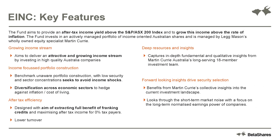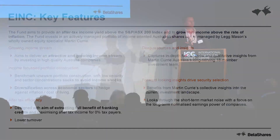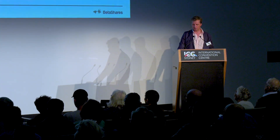Here's what Legg Mason seeks to do in terms of active management: a diversified portfolio focused on quality companies with growing and sustainable income streams. Another key benefit is that it looks for after-tax efficiency, keeping franking credits front of mind for investors who can utilize those within their portfolio. Legg Mason also utilizes forward-looking projections, meaning investment decisions are based not on the past but on forward estimates of how companies will perform into the future.